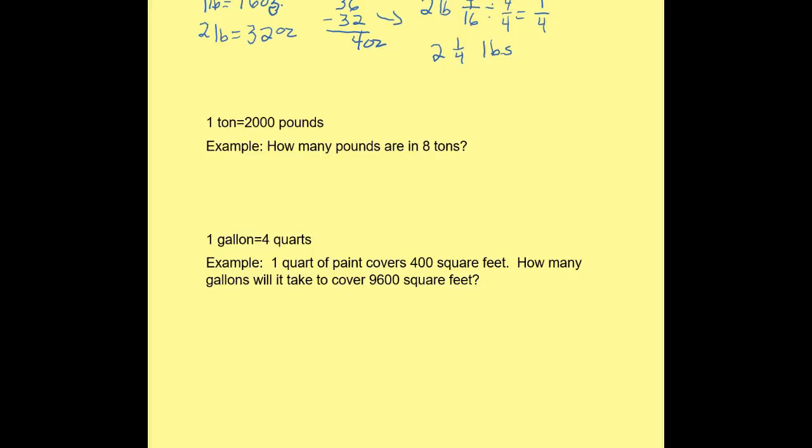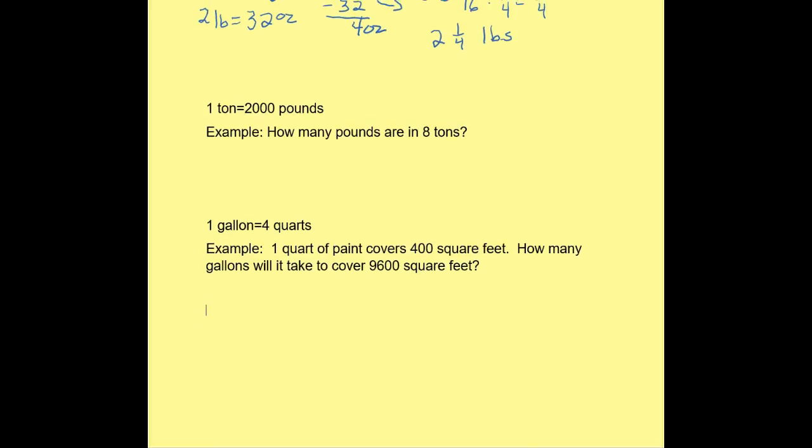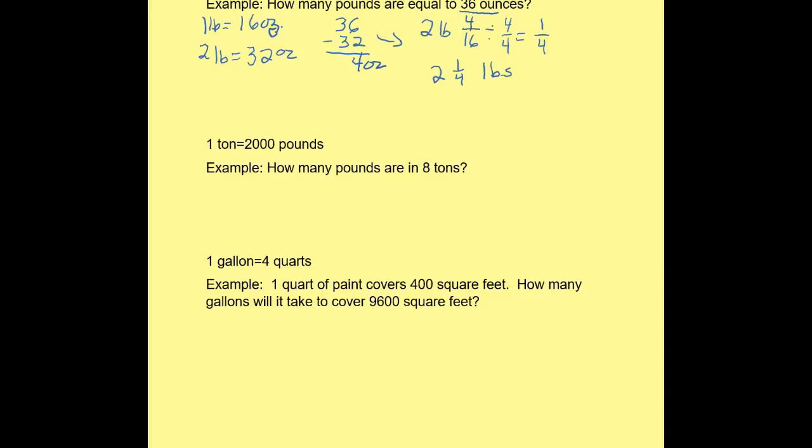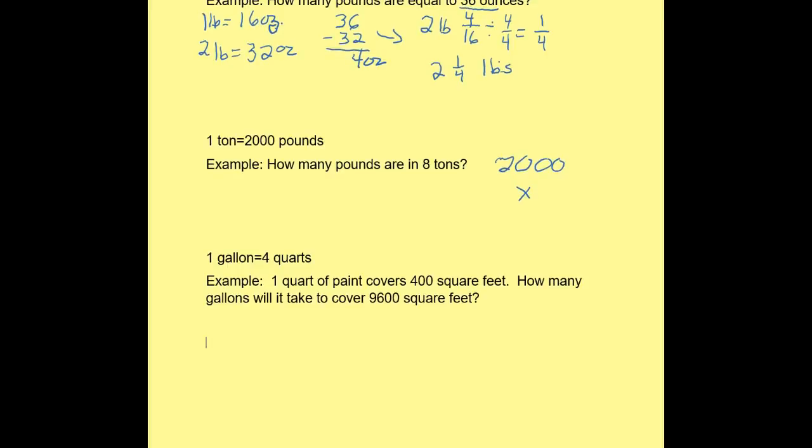So I know that 1 ton is equal to 2,000 pounds. I want to find out how many pounds are in 8 tons. Well, just like the above problem, we need to keep the proportions the same. So all that's telling me is for every ton I have, I'm going to have 2,000 pounds. So what I'm going to do is just multiply to solve this. So I have 2,000 times 8. Every time I multiply by a 0, it's going to be 0, and then 8 times 2 is 16. So how many pounds are in 8 tons? 16,000 pounds.